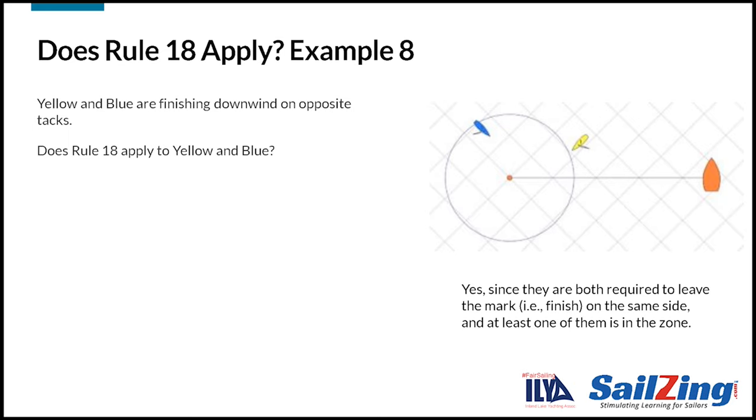Yes, Rule 18 applies since they are both required to finish on the same side and blue is in the zone. Even though they are on opposite tacks, none of the Rule 18.1 exceptions apply. So, if boats are on opposite tacks, Rule 18 does apply at a downwind finish, but doesn't apply at an upwind finish if they are on opposite tacks.